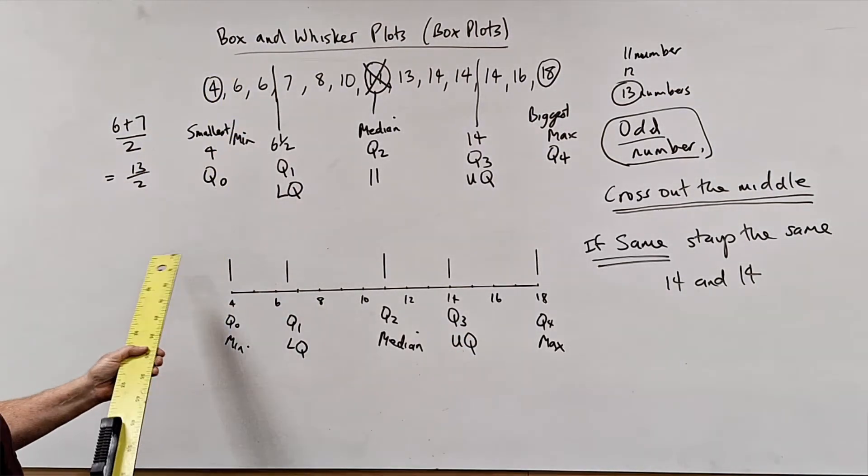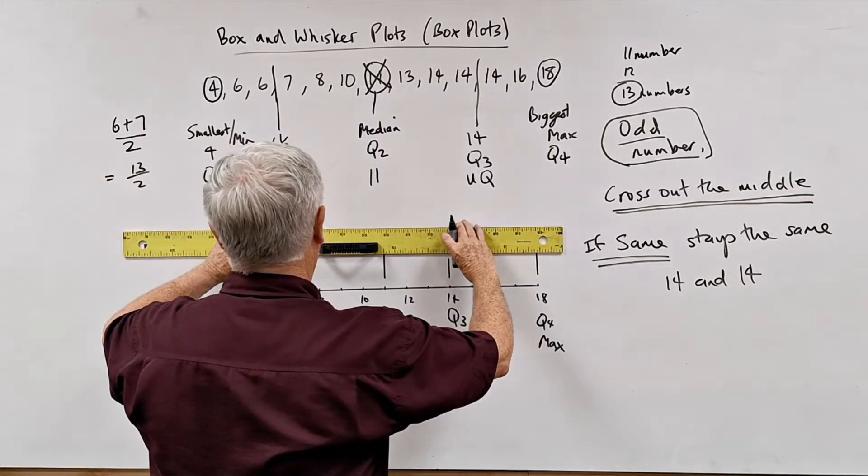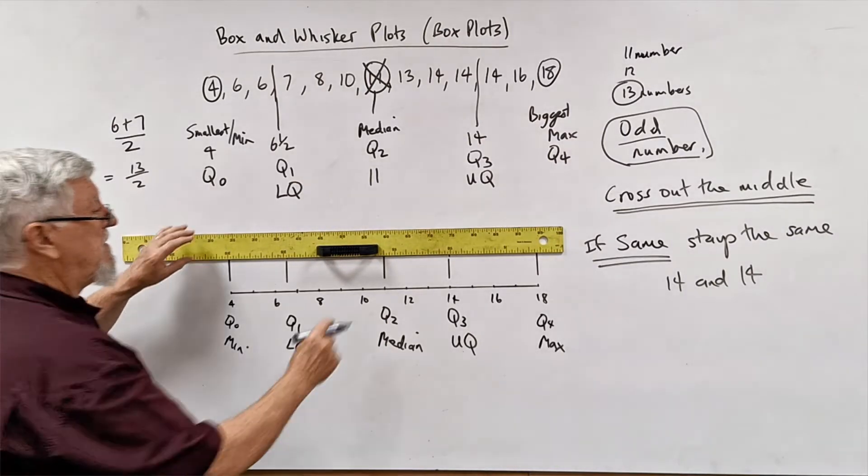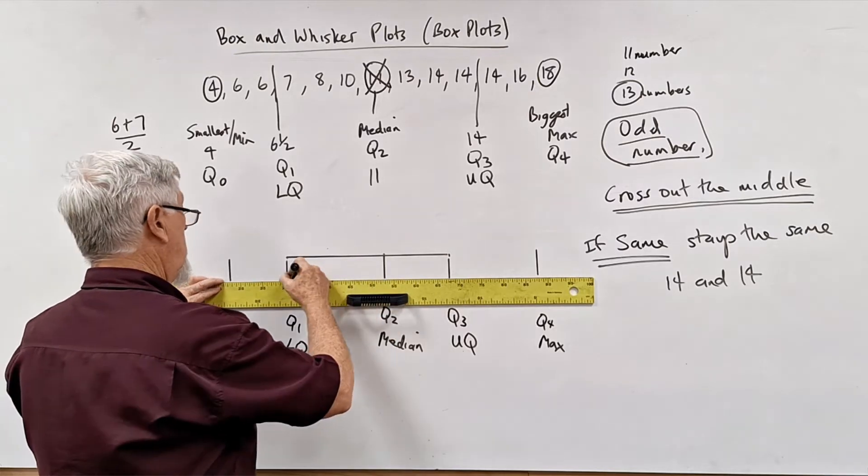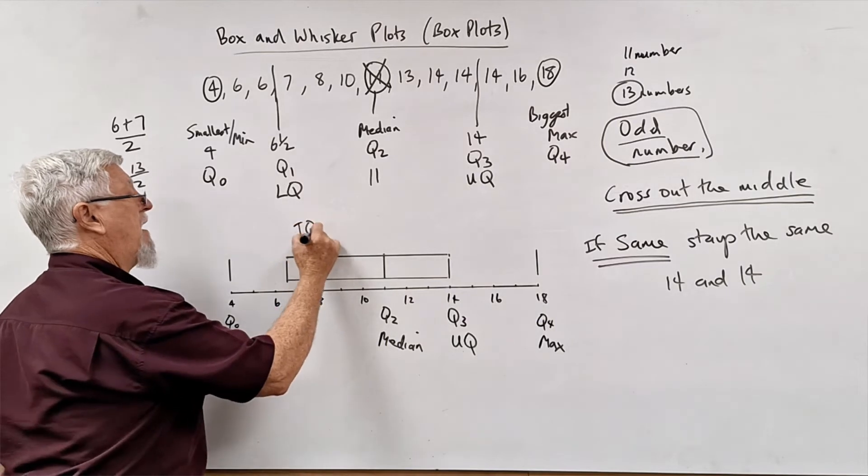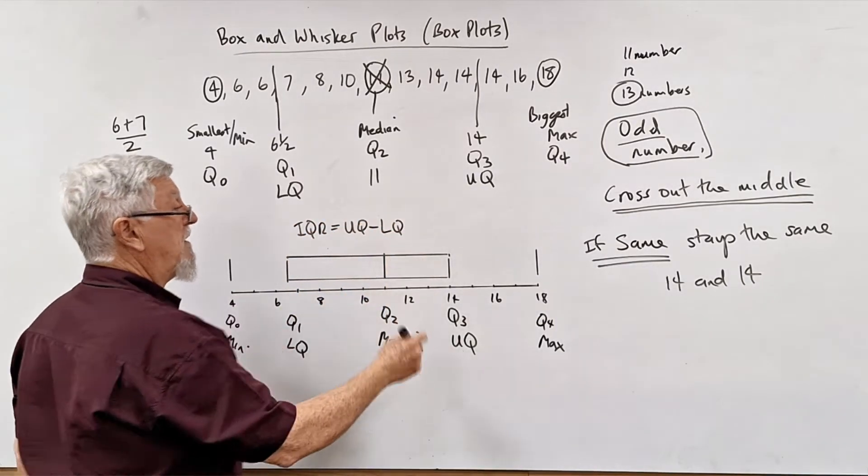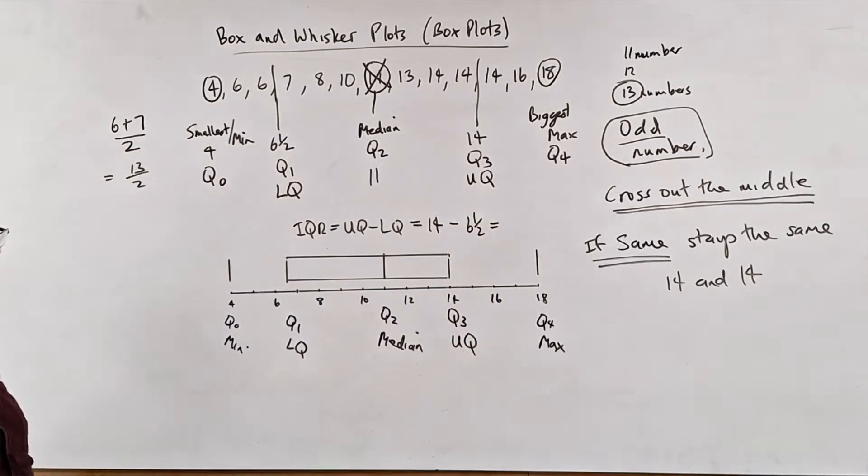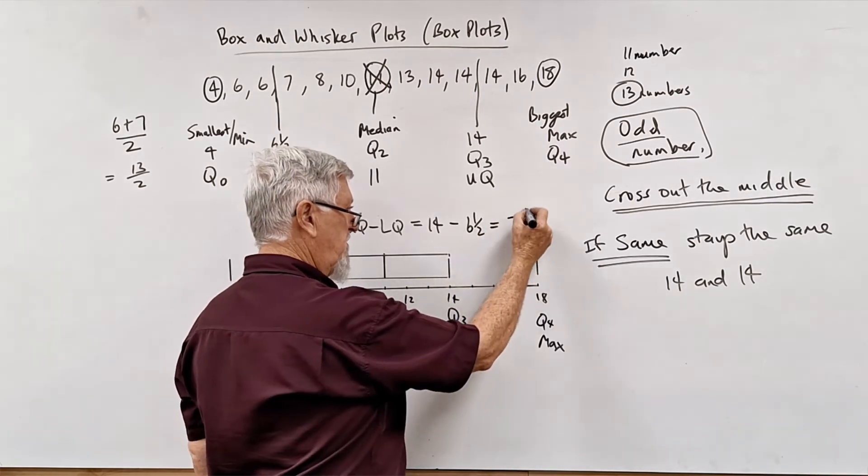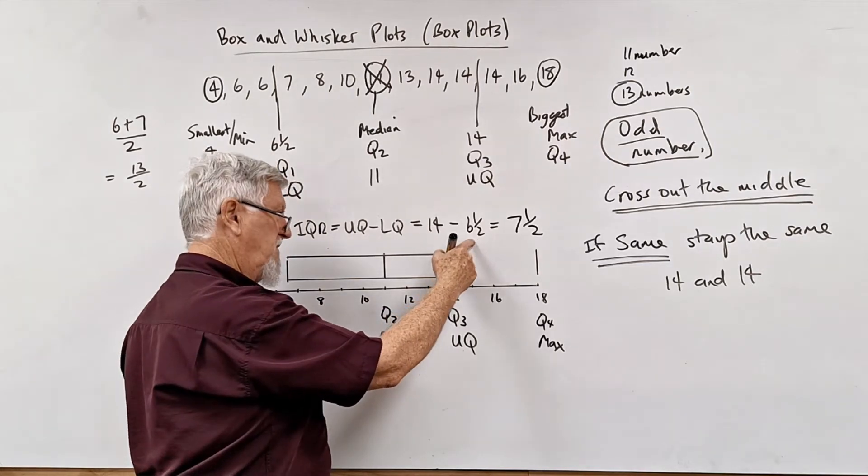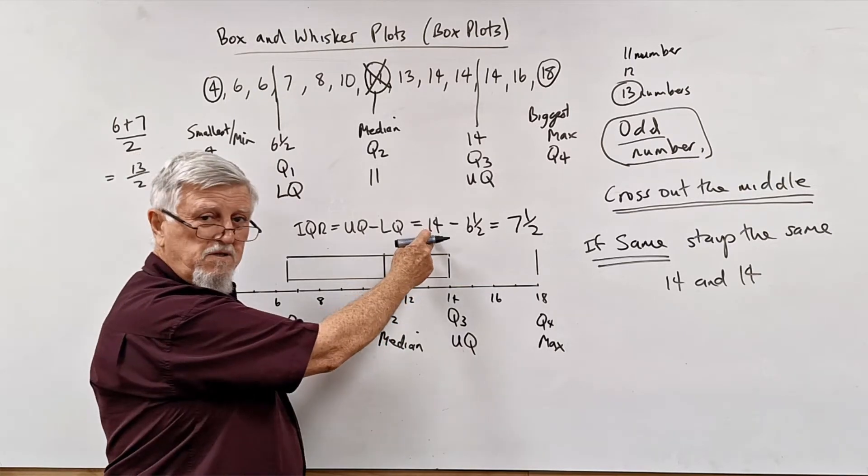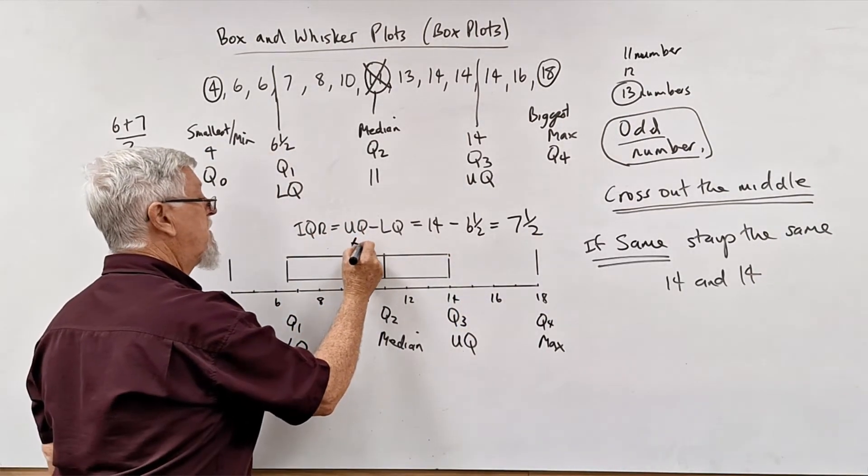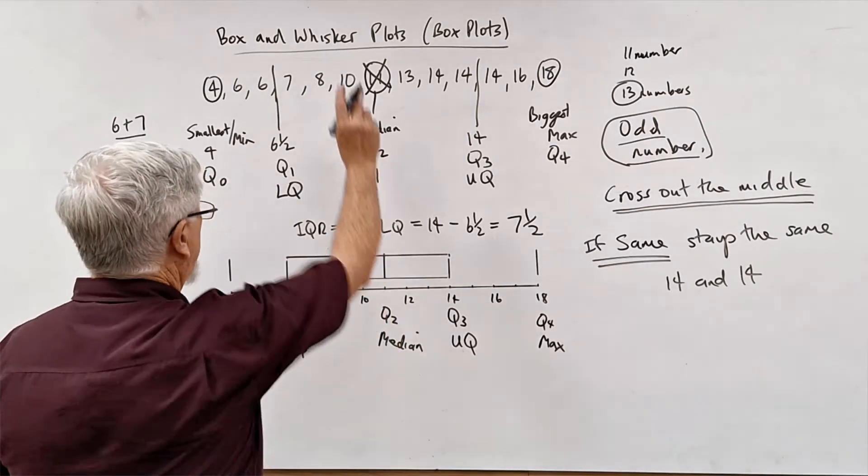Now, why is it called the box and whisker plots? Because you draw a box across the middle. Because what we're really looking at and trying to figure out in particular is where is the middle. So the interquartile range is the middle in here. Now the previous video, if you want to look up interquartile range, it's the length of this box. So IQR equals the upper quartile minus the lower quartile. The upper quartile is 14 and the lower quartile was six and a half. 14 minus six and a half is seven and a half. So that's the box. And then across these two, you put a line and that's a whisker.